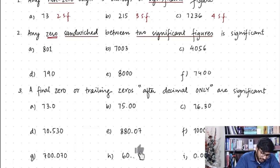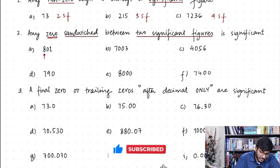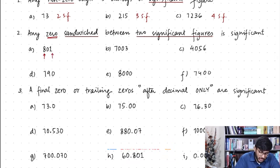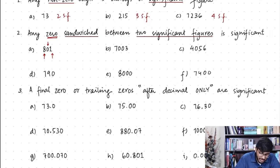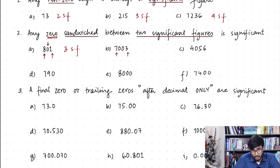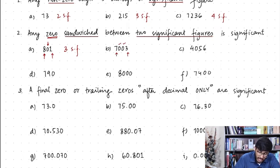For example, 801: the 8 and 1 are both significant, so the zero sandwiched between them is also significant — we have three significant figures. For 7003: seven and three are both significant non-zero digits, so both zeros are also significant, giving four significant figures.